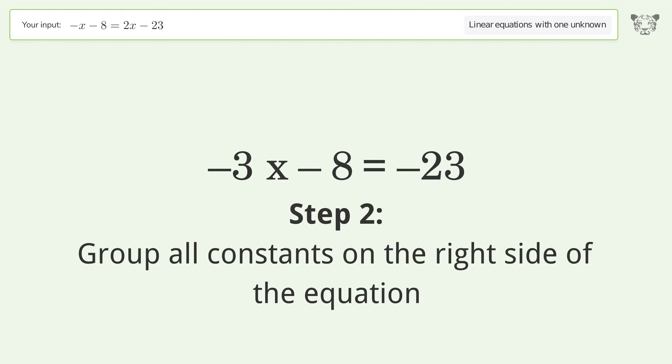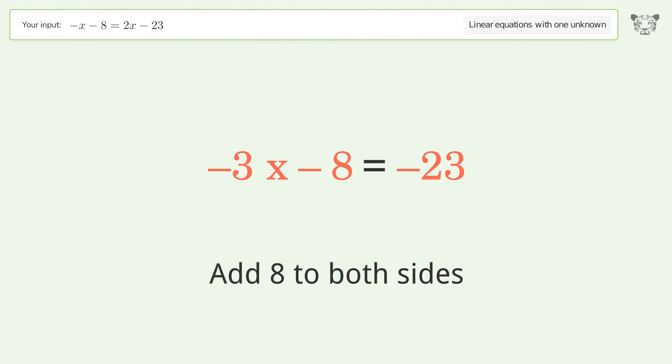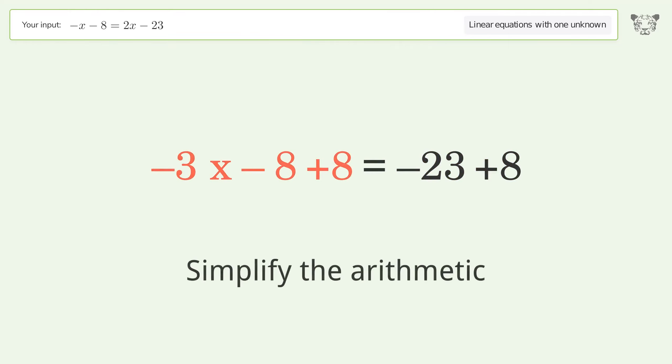Group all constants on the right side of the equation. Add 8 to both sides. Simplify the arithmetic.